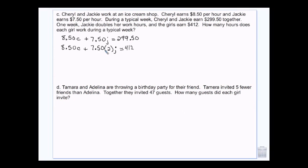This becomes 850C plus 750J is equal to 299.50, and 850C plus 1500J is equal to 412. Because these are the same, I have to subtract this whole equation. Which makes this a negative, this a negative, and this a negative. Because they were all positive.